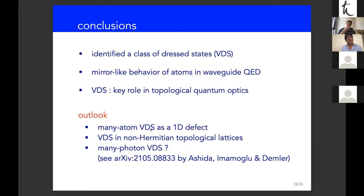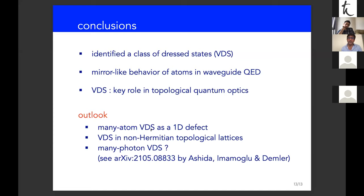In summary: we identified a class of dressed states called vacancy-like dressed states (VDS). This class provides a natural framework for interpreting waveguide QED phenomena such as formation of dressed bound states in the continuum, where atoms behave as mirrors, and also perfect reflection of a resonant photon in a one-dimensional waveguide — which can also be interpreted fully in terms of an unbound VDS. VDS are not necessarily bound. The framework also shows the key role of VDS in topological quantum optics for topologically protected atom-photon dressed states.